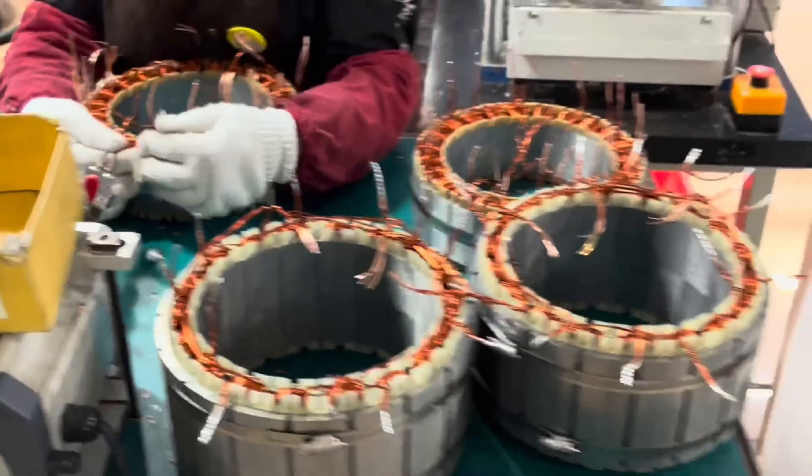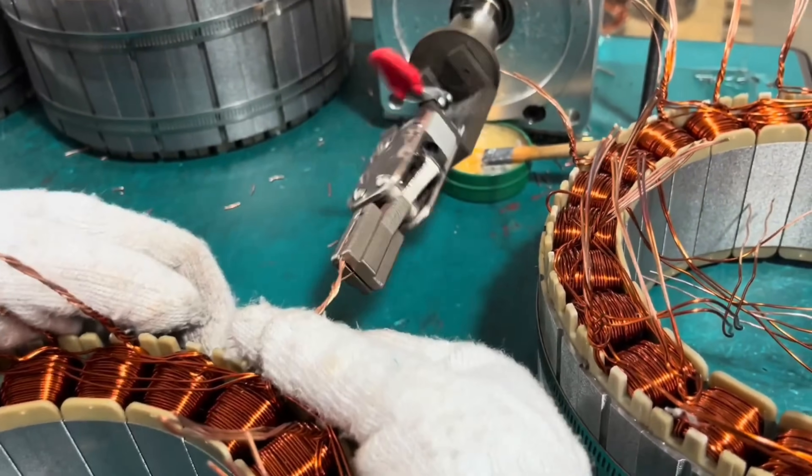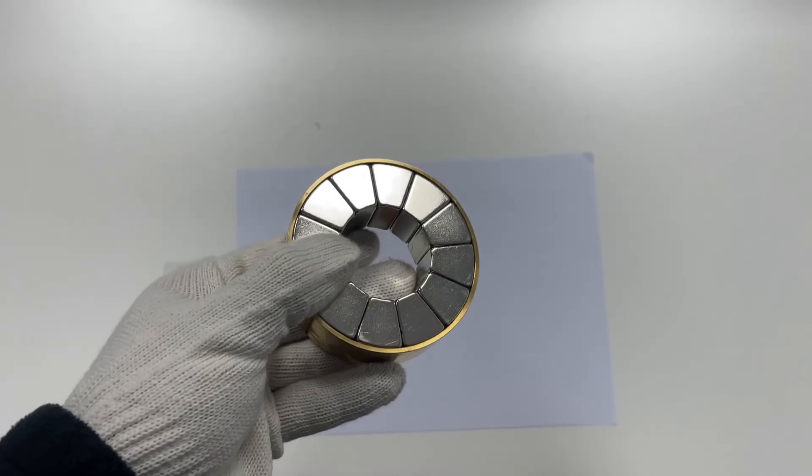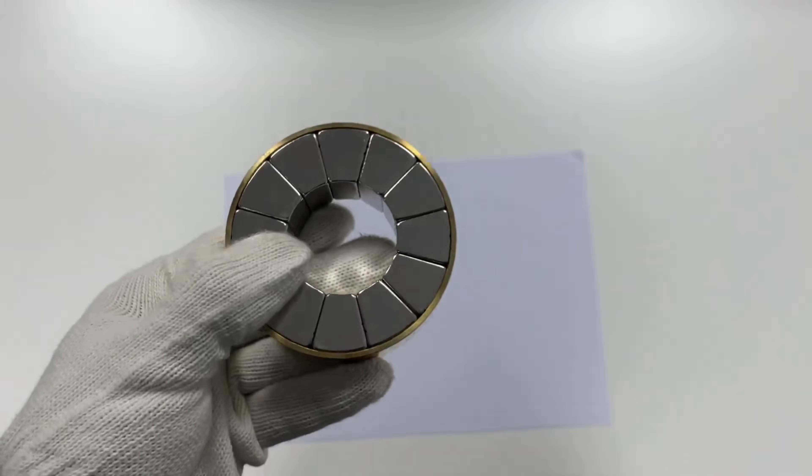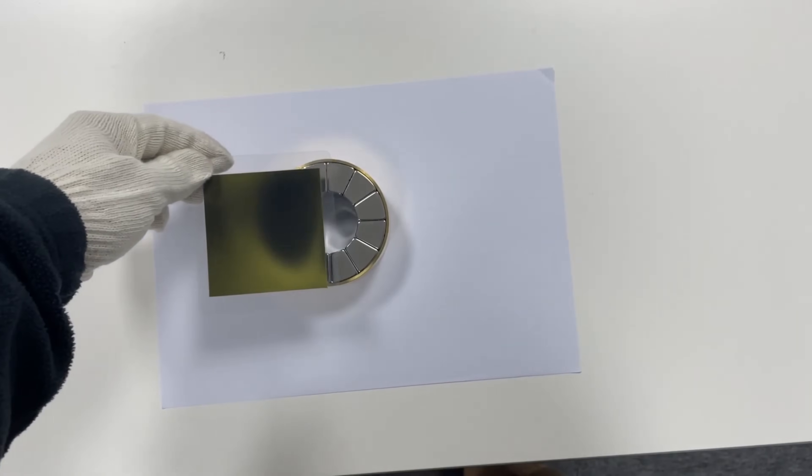A typical permanent magnet synchronous motor, PMSM, can achieve over 90% efficiency, so it is possible that the comparison is with a conventional brushed motor. The efficiency of a motor is determined by dividing mechanical power by electrical power, taking into account load percentage.